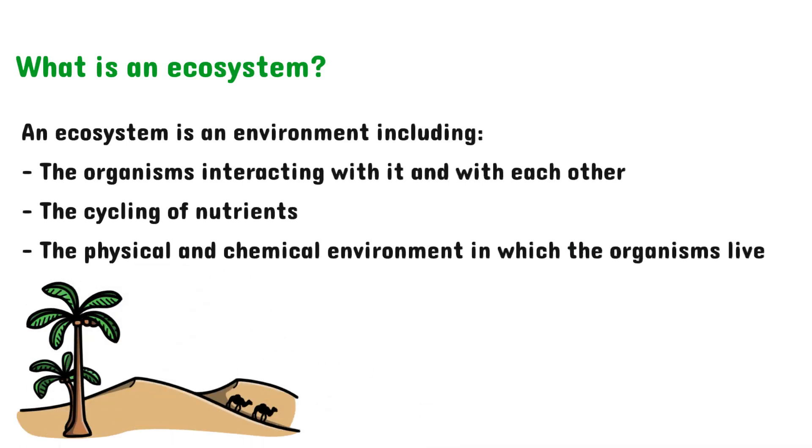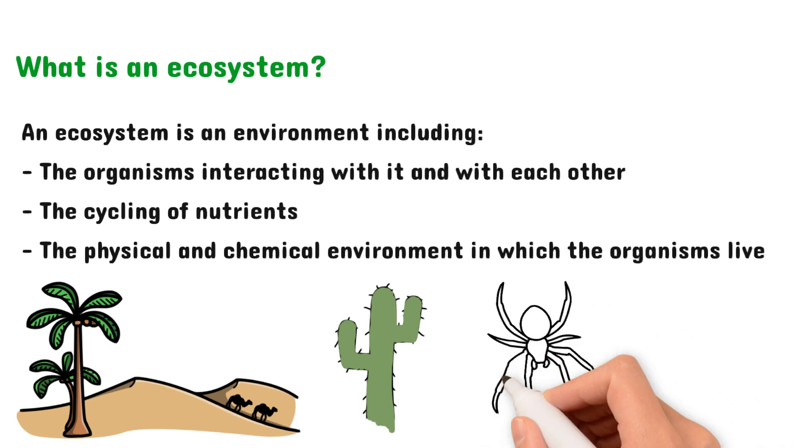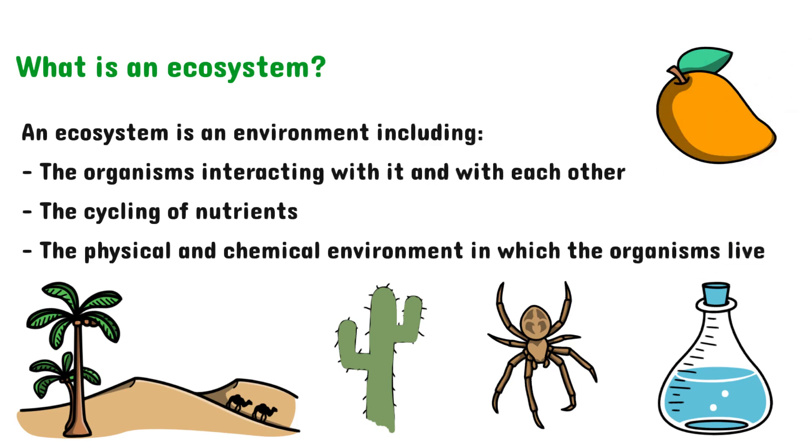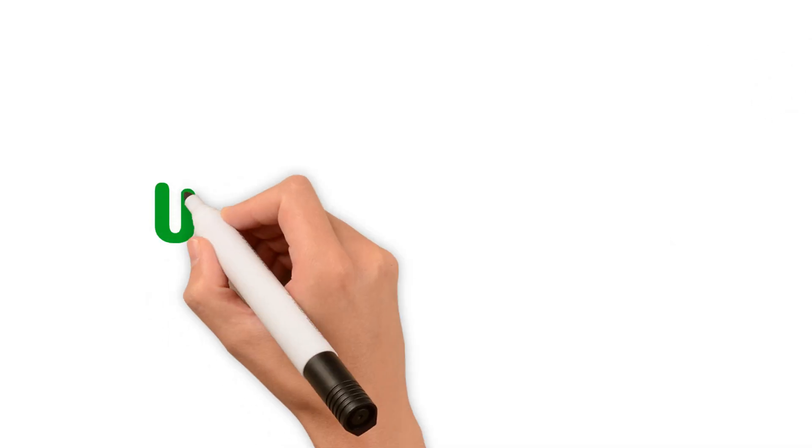This will include all the desert plants, animals, organisms interacting with it and with each other, the cycling of nutrients such as water and food, and the physical and chemical environment of the desert. Now we're going to go through the terms that we have to understand and memorize.